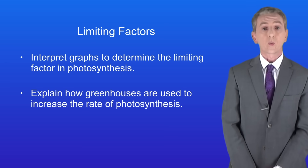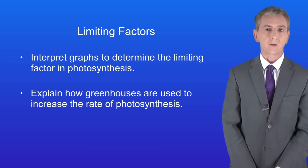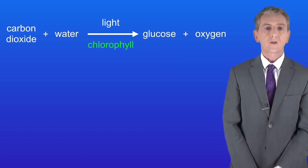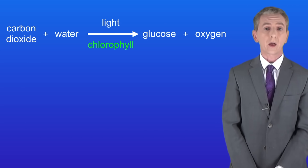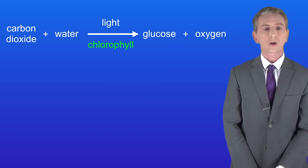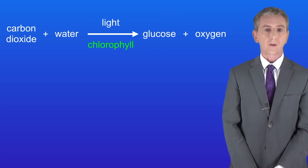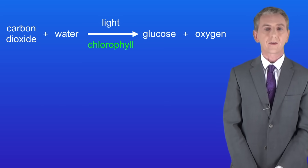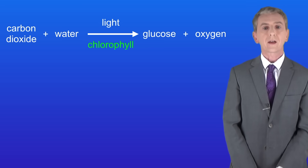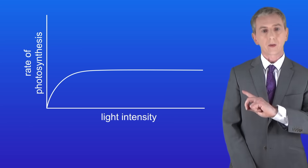In the last video we looked at the equation for photosynthesis. We saw that light energy is absorbed by chlorophyll and used to react carbon dioxide with water to make the sugar glucose. Oxygen is also a product in this reaction. We then saw that if we increase the light intensity and measure the rate of photosynthesis, we get a graph like this.